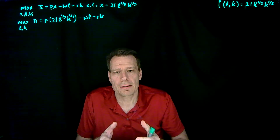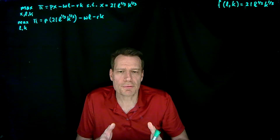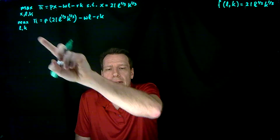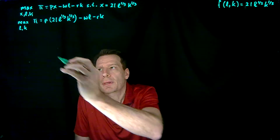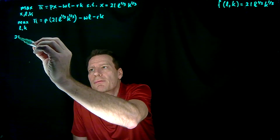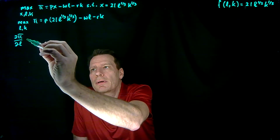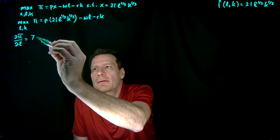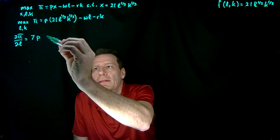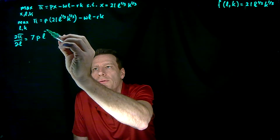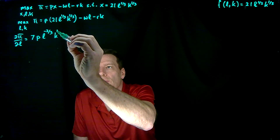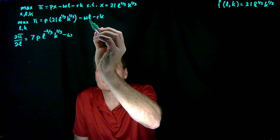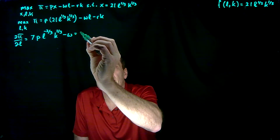We can find the profit maximizing levels of labor and capital by differentiating profit with respect to labor and capital and setting those equal to zero. Differentiating profit with respect to labor, we get one-third times 21 — that gives us 7 — times P times L to the minus two-thirds K to the one-third, minus W, and that has to equal zero.